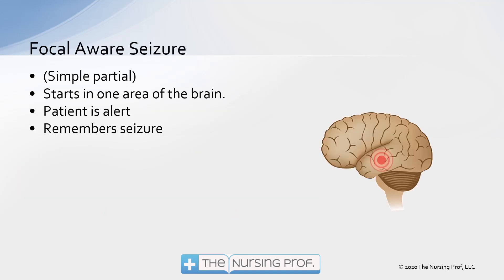Let's start with a small type of seizure coming from one area of the brain: the focal-aware seizure, previously called a simple partial seizure. It starts in one area of the brain. The patient is usually alert and remembers the seizure. They may feel like they're fading away, have an abnormal sensation, or present with some rhythmic motion of a part of their body.